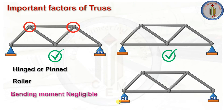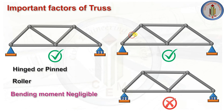Trusses can have one hinged support and one roller support — that is the correct configuration. However, a truss with roller supports on both sides is wrong and not allowed, because the joint could move horizontally, vertically, or a combination of both. Also, regarding self-weight: the self-weight of a member acts at its center of gravity. Since the joints are pinned, any bending moment from self-weight can be neglected. Truss members have only axial force — no bending moment or shear force.